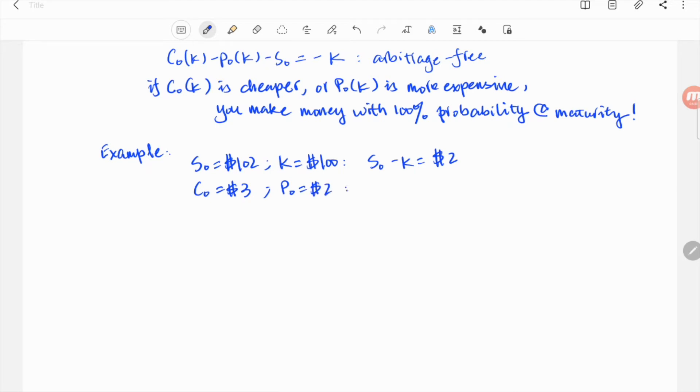And we set the put price to be $2 because of the probability of the stock's price dropping in the future. In this example, the price difference between the call and the put is $1.